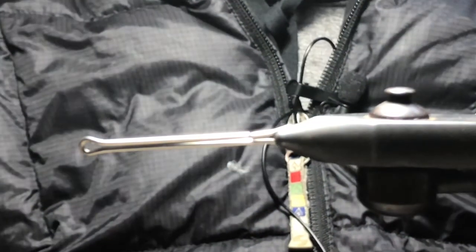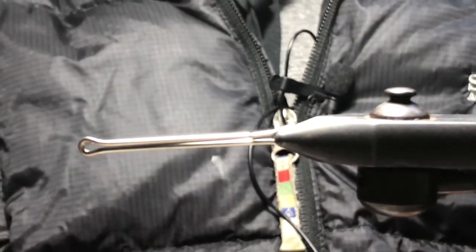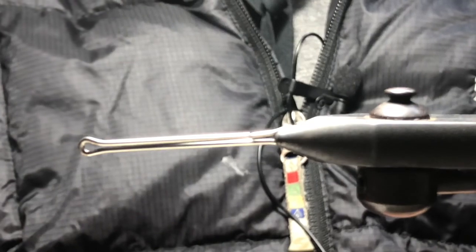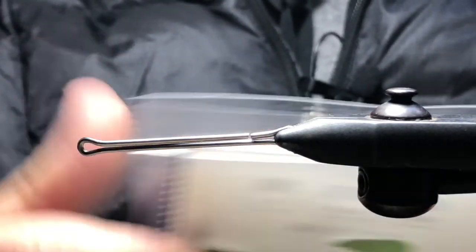How's it going everyone, this is Dave from wetflyswing.com. Today I'm going to show you how to tie on a stinger hook on any fly like an intruder style or anything where you want to get a stinger.